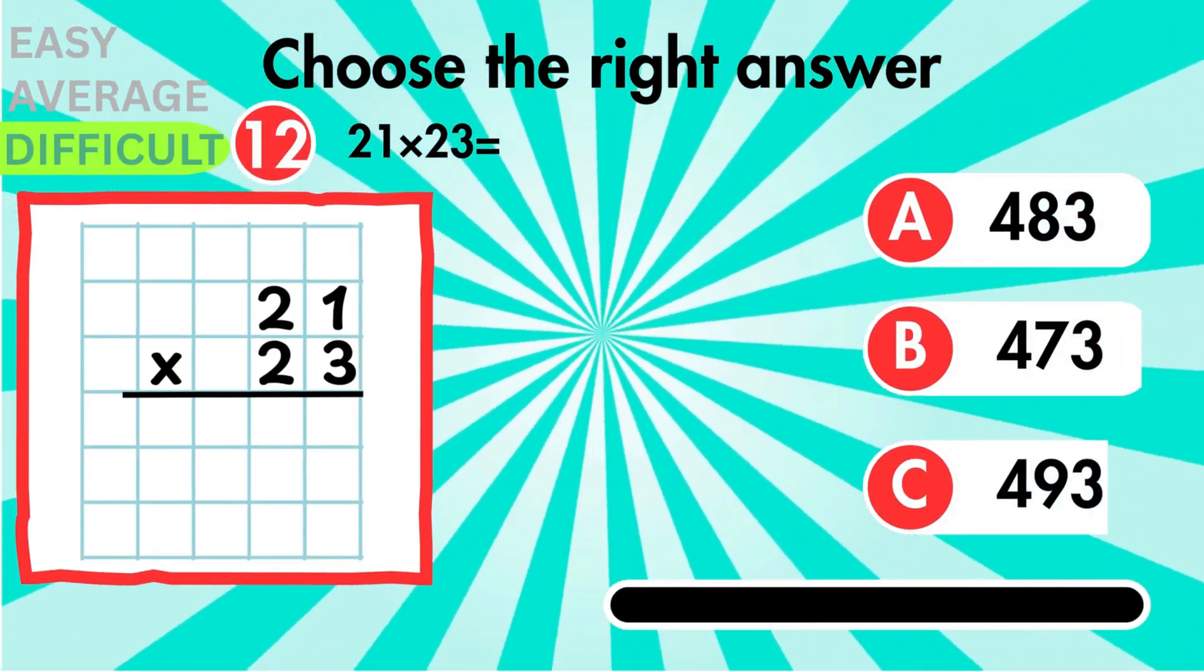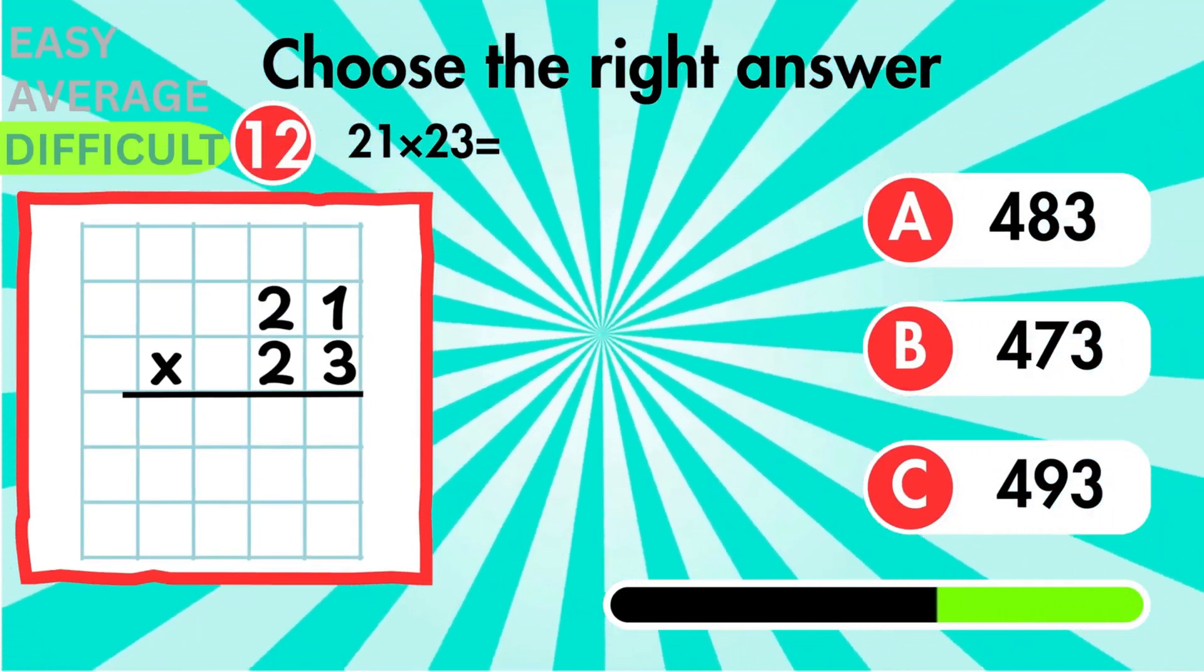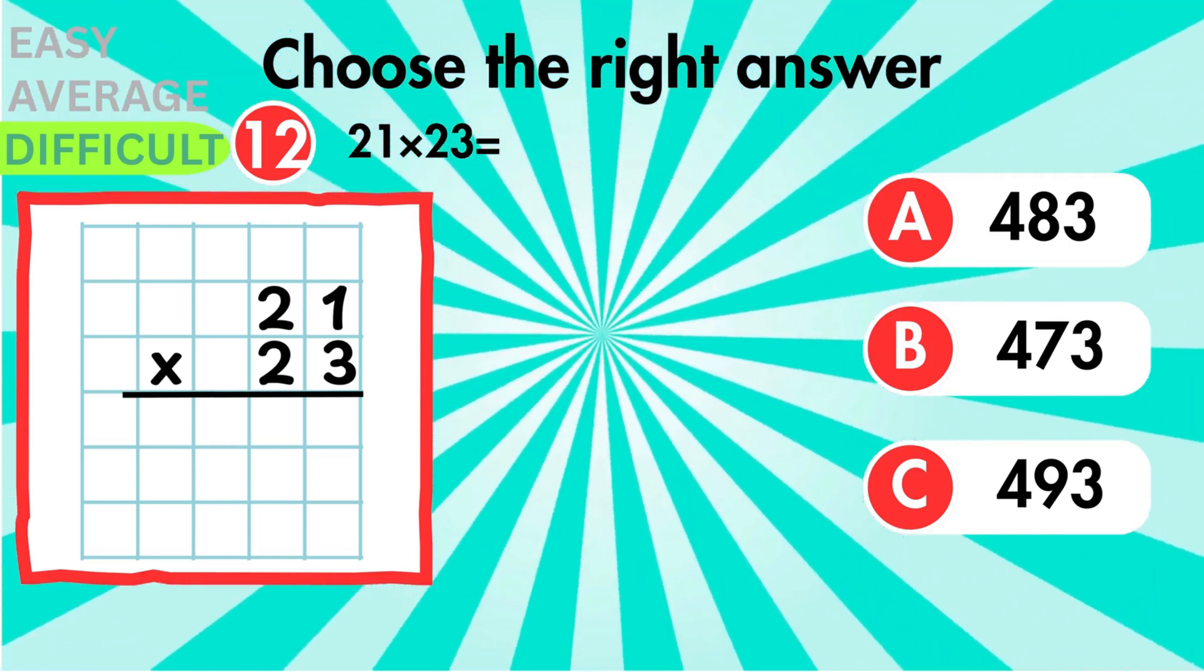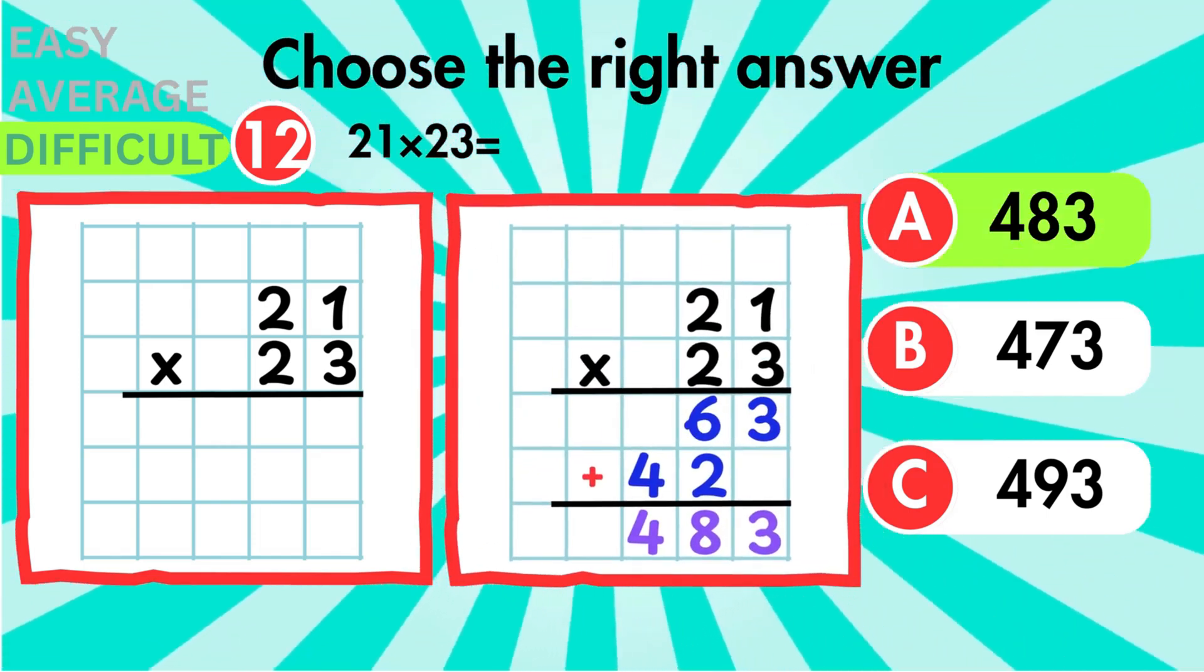Try 21 groups of 23. This involves 21 times 3 and 21 times 2. The result is 483.